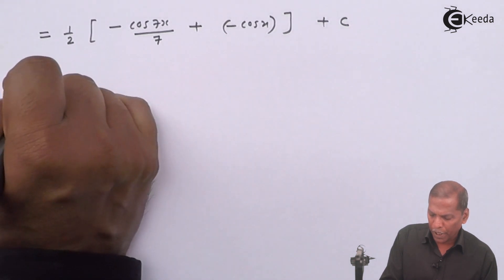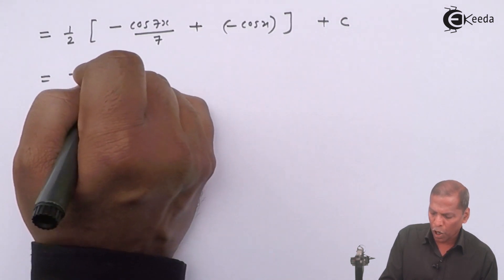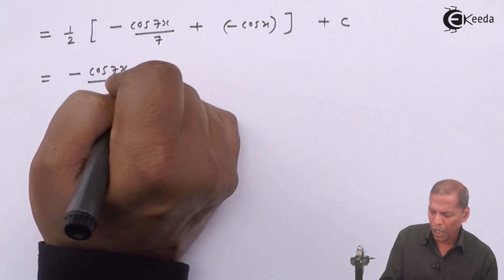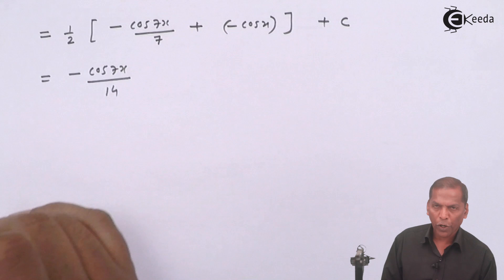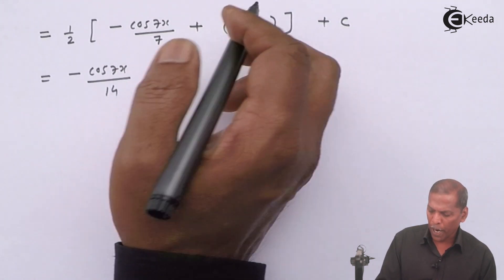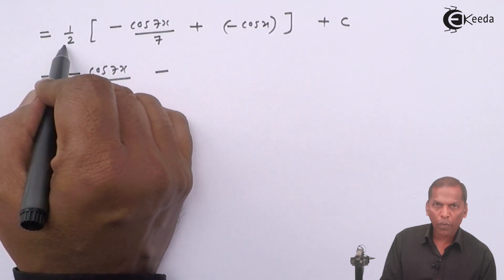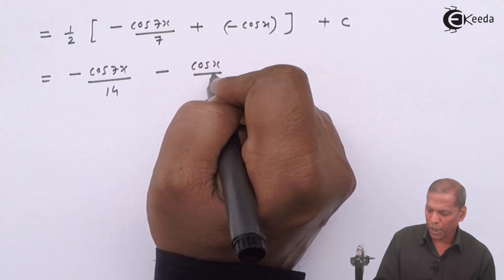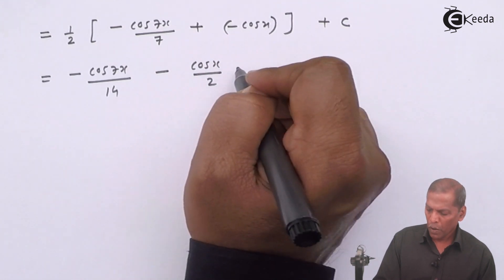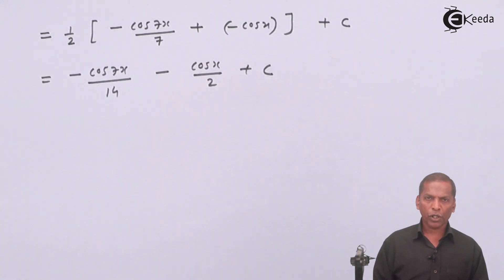So this can be written as −cos(7x) divided by 14 (since 2 multiplied by 7 gives 14), then minus (1/2)·cos(x) plus C. So this is the required solution for the given problem.